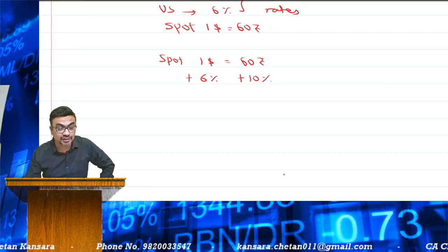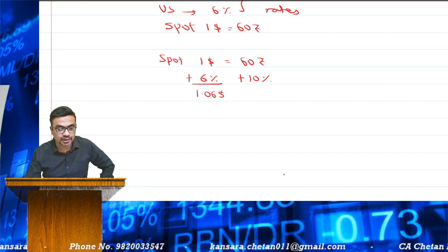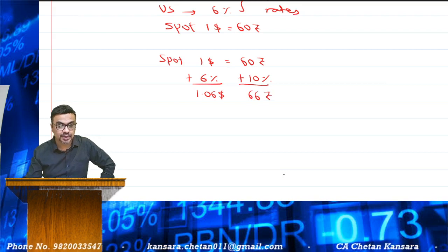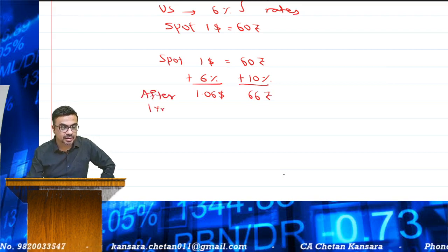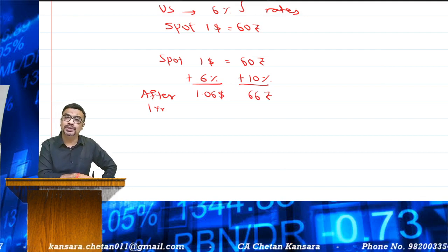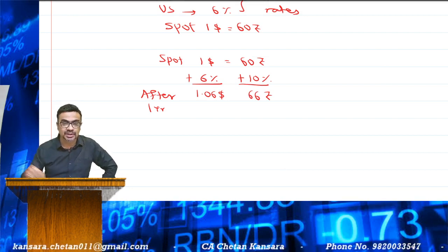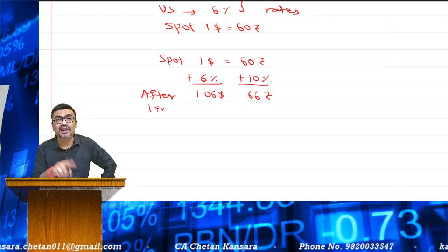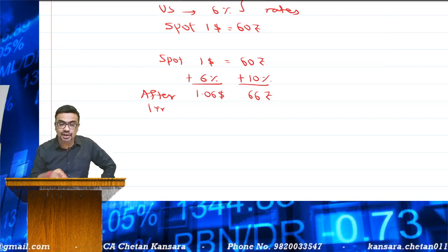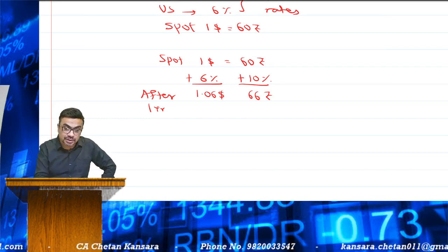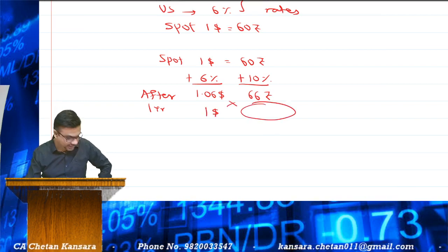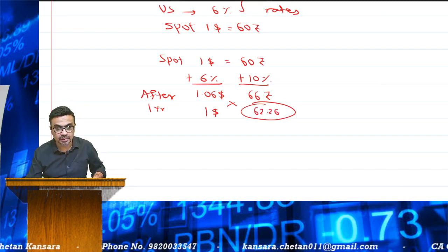After one year, the person in US will pay $1.06, and the person in India will pay 60 plus 10%, which is 66 rupees. So there has to be parity. If the amounts are not matching, there is a scope for arbitrage. So after one year, $1.06 should equal 66 rupees, meaning $1 equals 66 divided by 1.06, which gives us 62.26 rupees.